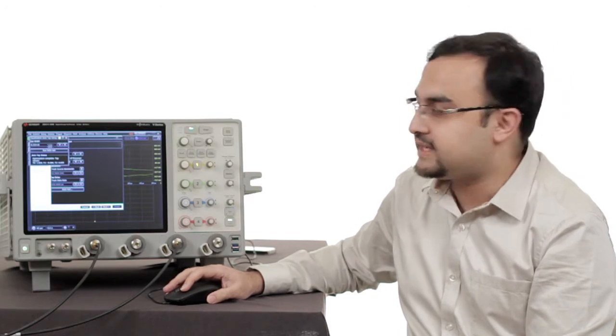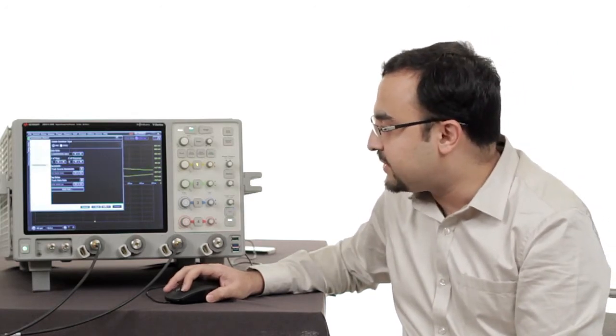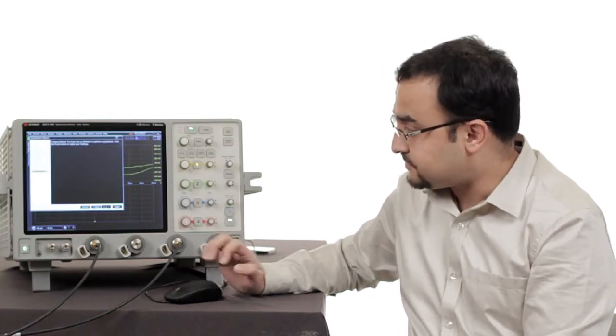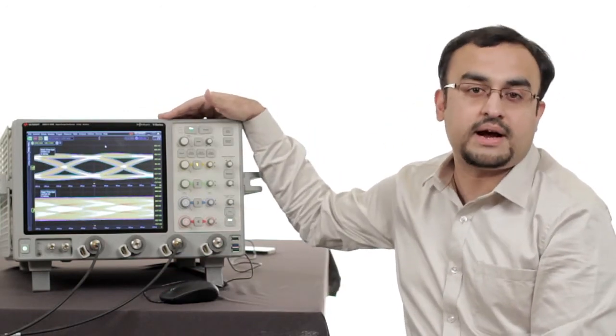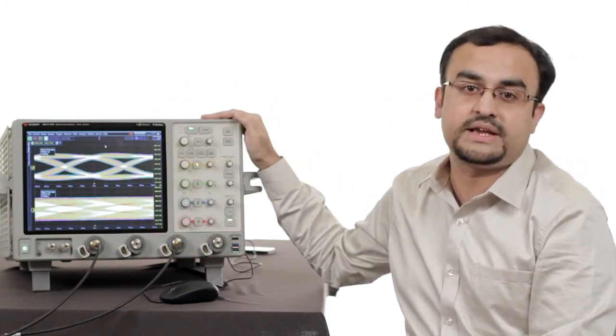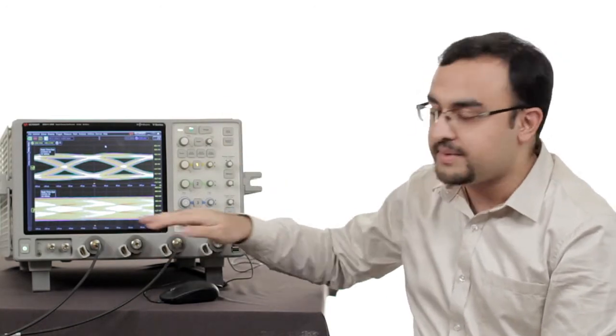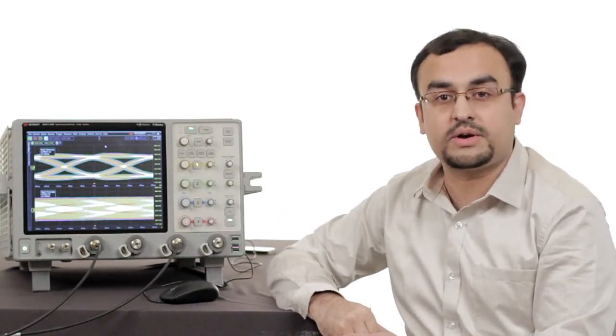Infinium will automatically compute these taps and I should be able to get an eye very soon. So you can see the top eye is the eye after the equalizer, the FFE, and the bottom eye is the eye without applying the FFE.